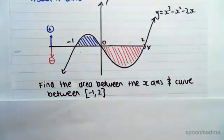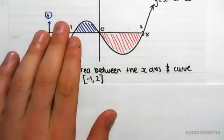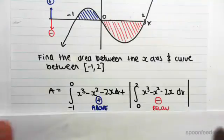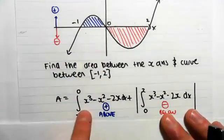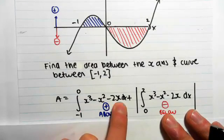We have to separate them out when calculating the area. The area is going to be the integral from minus 1 to 0 of x cubed minus x squared minus 2x dx.